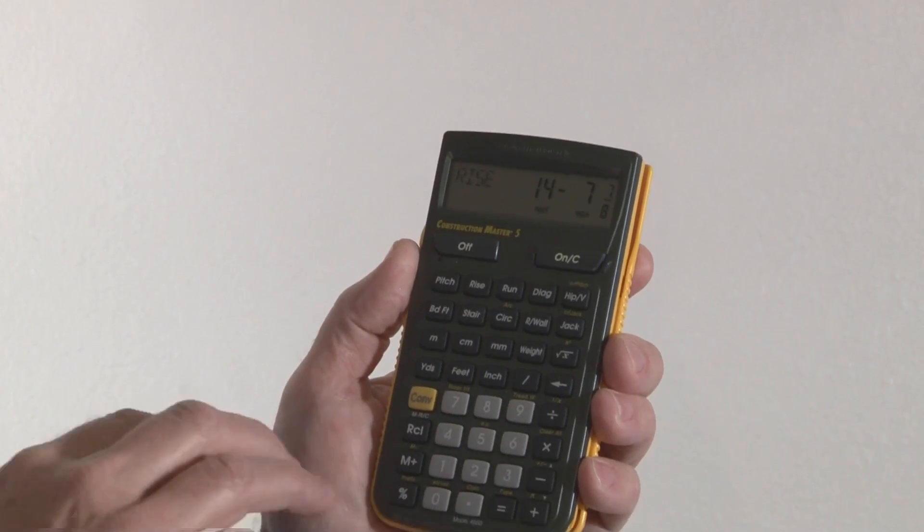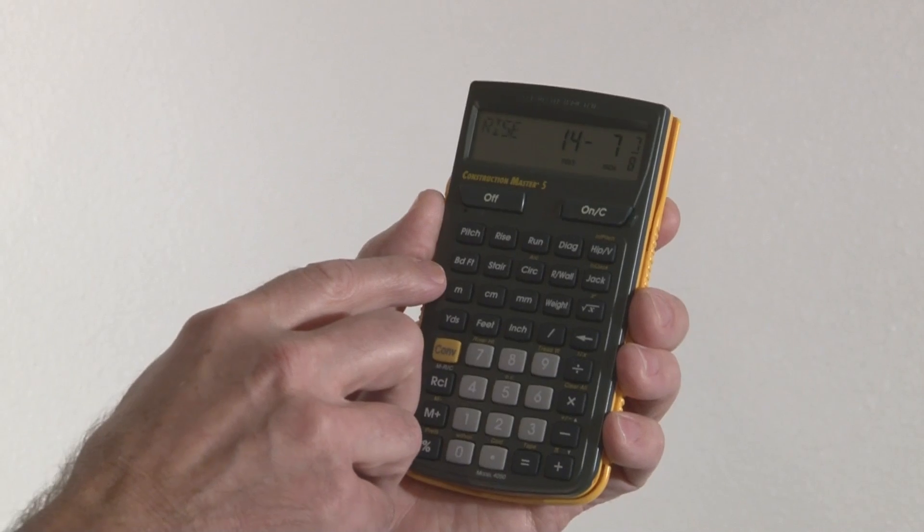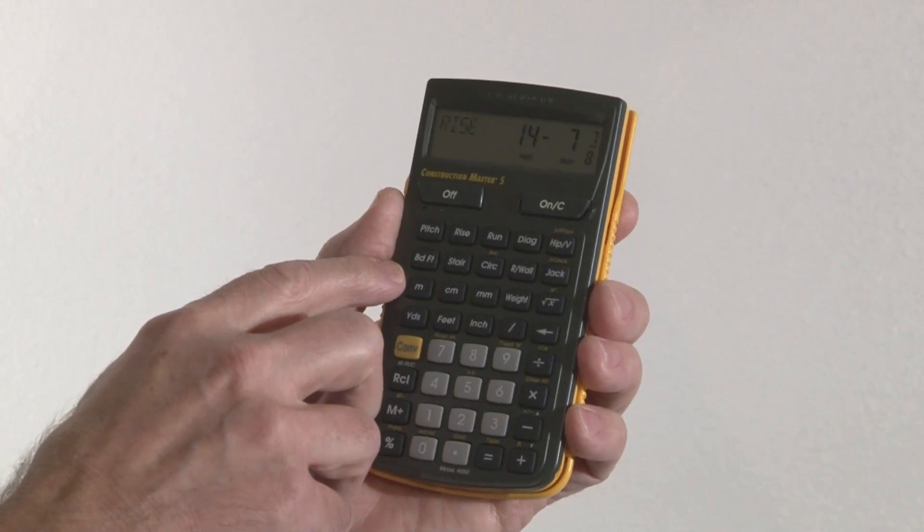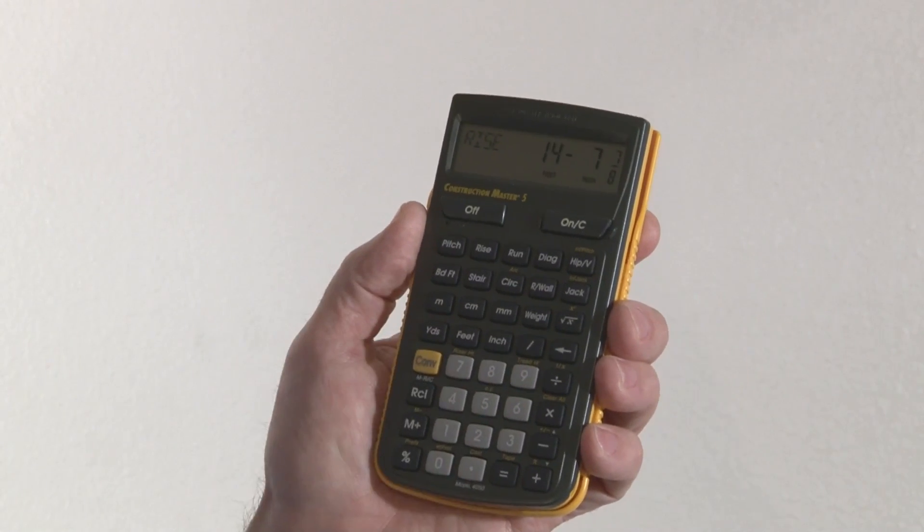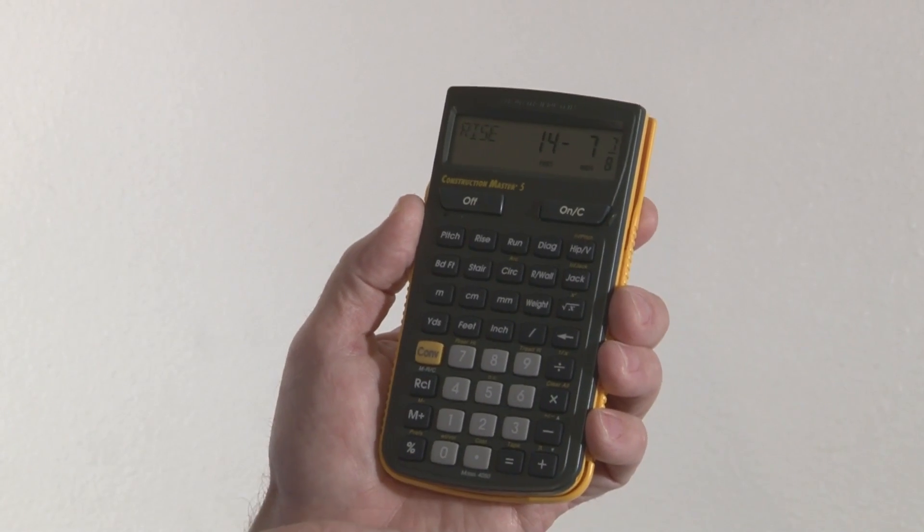The stair layout key will give you all your risers, treads, stringer length, angles, etc. The board feet key here will give you lumber costs, total board footage, etc. The weight key will give you conversions between any kind of weight units that you might come across.